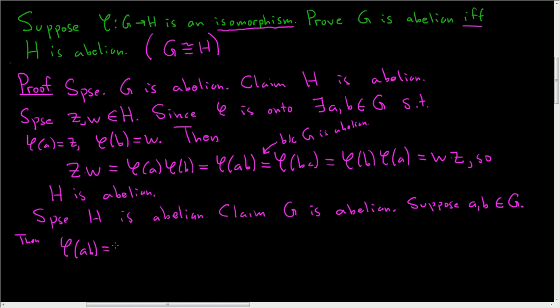phi of AB, well phi is a group homomorphism so this is phi of A phi of B. And phi of A and phi of B are elements in H and H is abelian so these guys commute. This is phi of B phi of A, and this is a key step. This is because H is abelian.